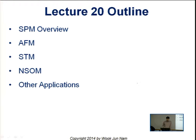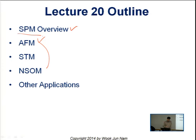Here is the outline. I'll give you some overview of the scanning probe microscope. These are the three most famous microscopy out of the scanning probe microscopy: atomic force microscopy, scanning tunneling microscopy, and near field scanning optical microscopy. We'll also talk about some other kinds of scanning probe microscopy and their applications.